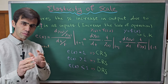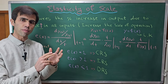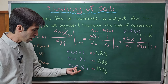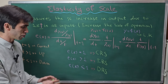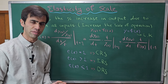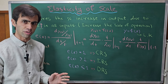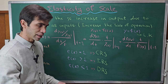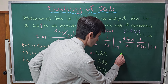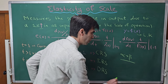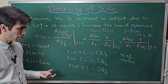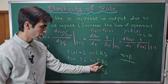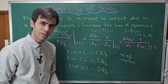In the next video, using examples related to the Cobb-Douglas production function, linear production function, and other types of production functions, I will show you practically how we use this formula. Especially for the Cobb-Douglas production function, where returns to scale depend on the value of alpha plus beta, we will exactly know when it shows constant, increasing, or decreasing returns to scale.